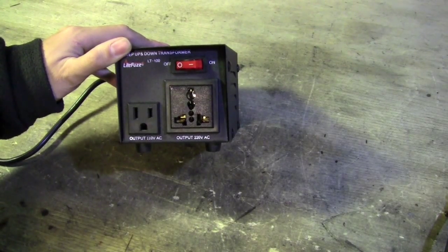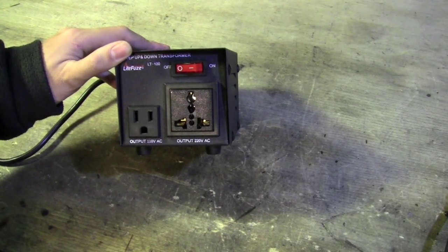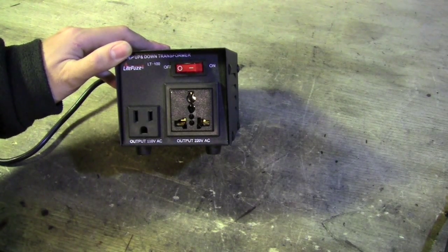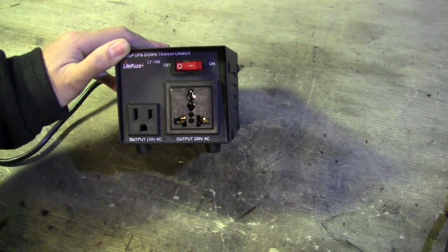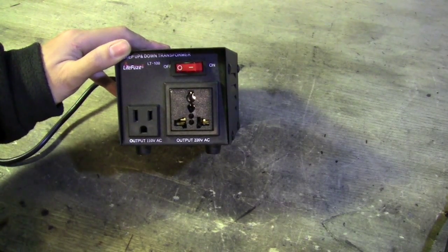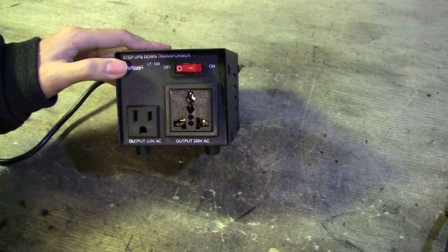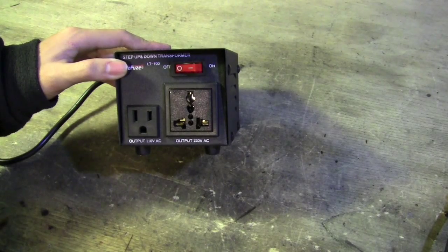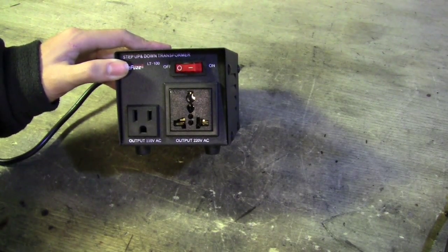So here's my little converter. I'll show you the control contactor board running on this. It's a FuseLite LT100 with 100 watts with an on-off switch and a fuse step-up-step-down transformer. Output 110 volts AC and output 220 volts AC.